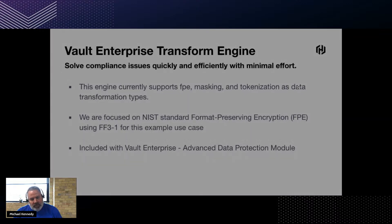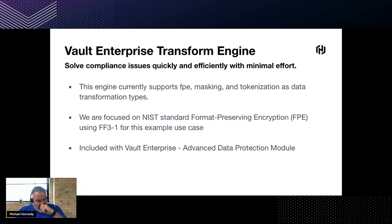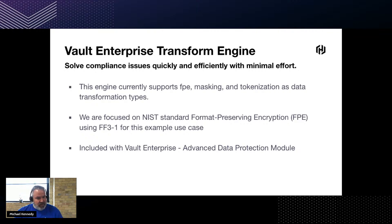The Transform engine currently supports a couple of different types of transformations: FPE, masking, and tokenization. FPE is format-preserving encryption, masking is as you might imagine masking of data, and tokenization is substituting data for other data. In this talk we're focused on the NIST standard FPE using FF3-1 for this example use case. The Transform engine is included with Vault Enterprise with the Advanced Data Protection module — unfortunately it's not available in the open source edition, so you'll need to get a Vault key from HashiCorp to give it a go.